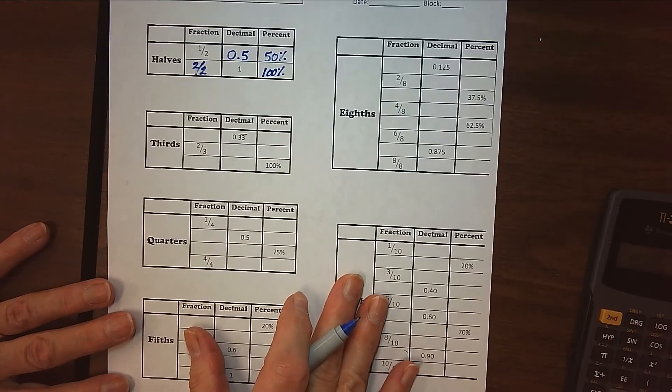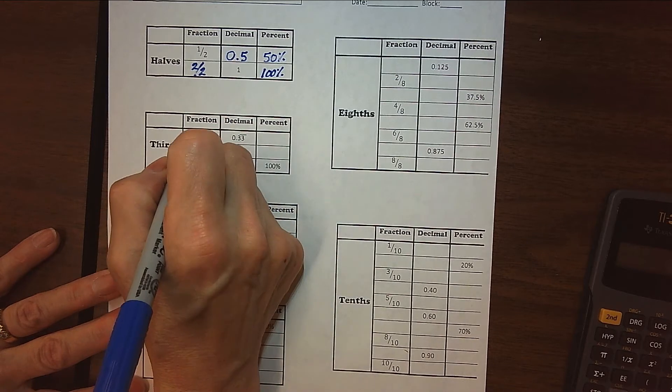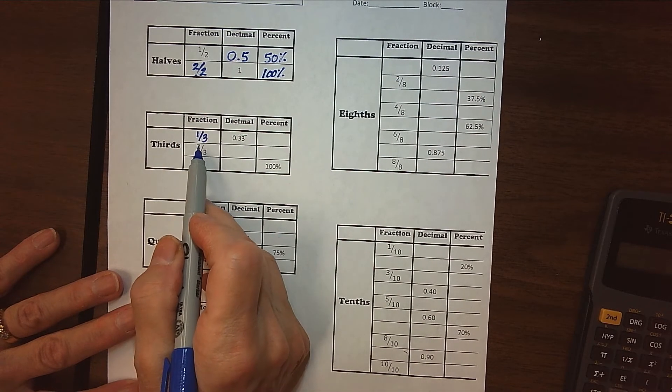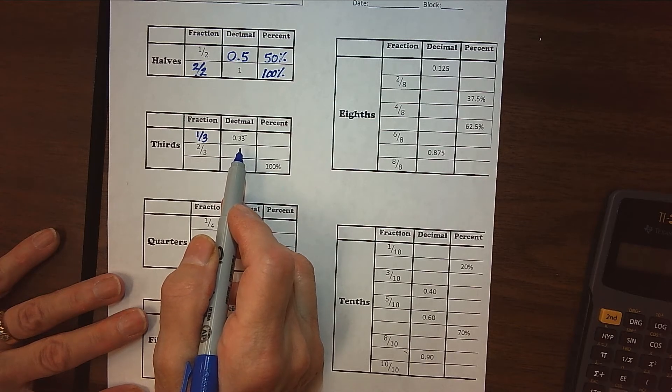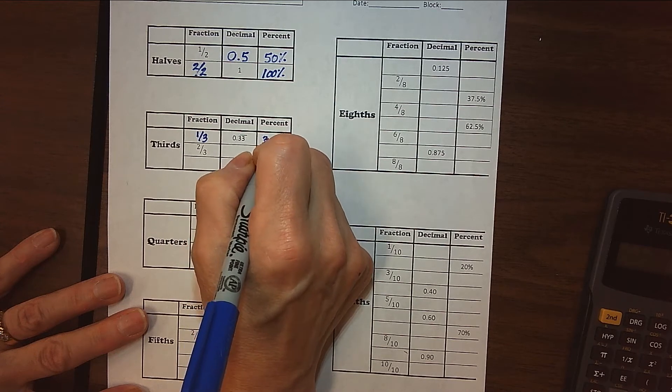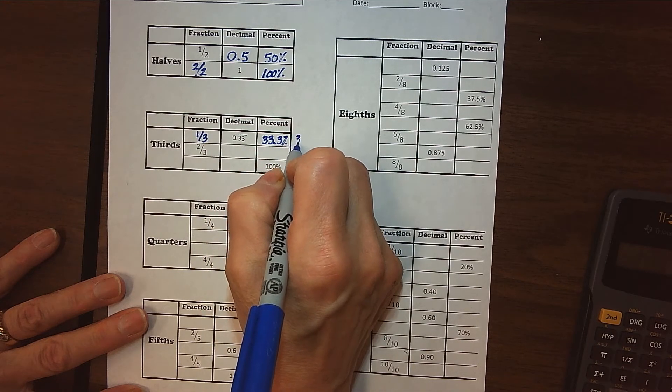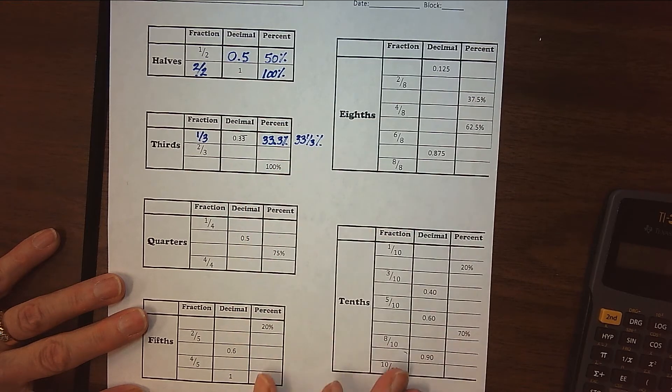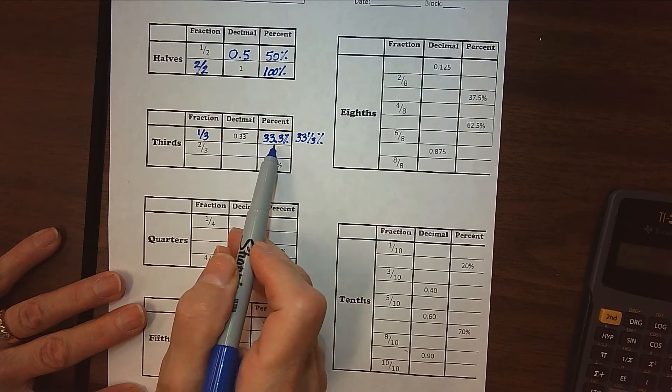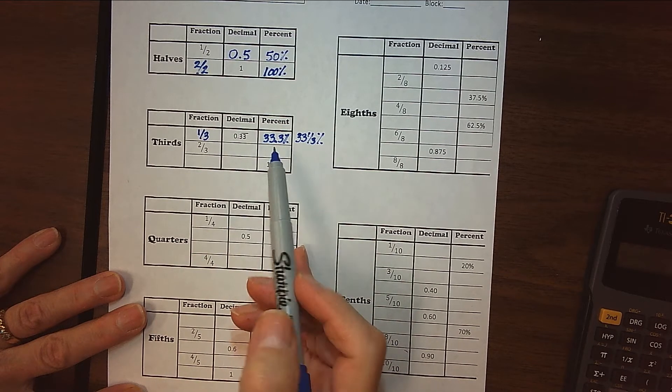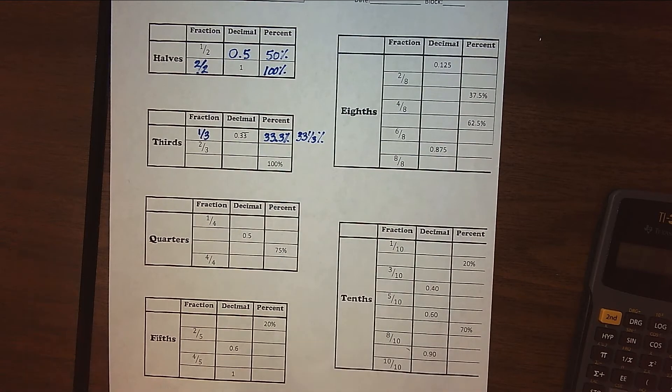Now on the thirds, the common ones that are handy to know would be this 0.3 repeating is the same as 1 third. And I kind of find this one fairly easy to remember because 1 third is 0.3 repeating. Not all fractions work out that way, but this 1 third does. And then if we change that to a percent, that's 33 and 0.3%, or a lot of times you'll see it written as 33 and a third percent is another way to see that written. You might notice that the decimals and the percents have the same numbers in them, the decimal points just in a different place. Because remember for percents, we're talking about how much out of 100, and then over here we're talking about how much out of 1.